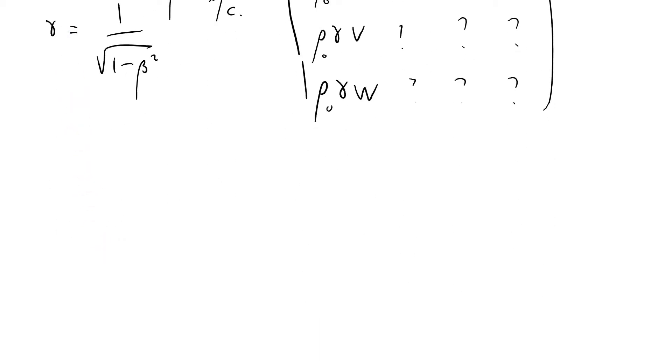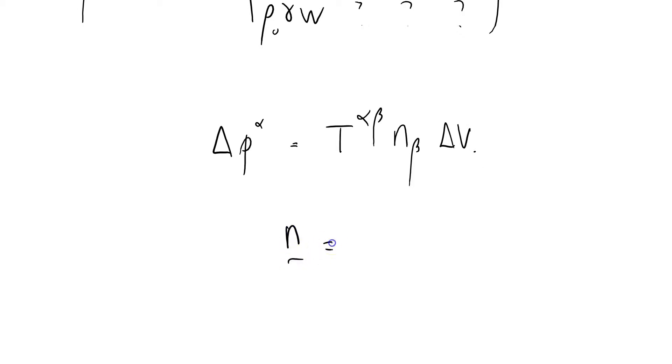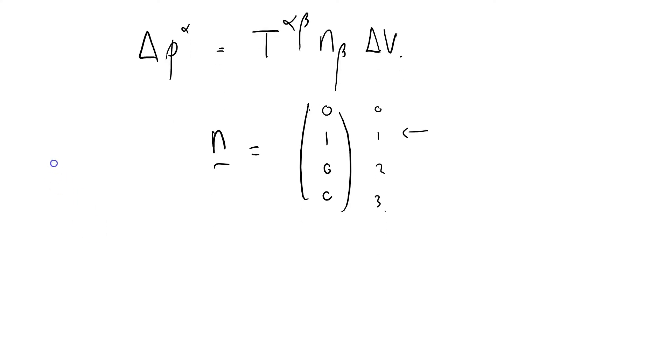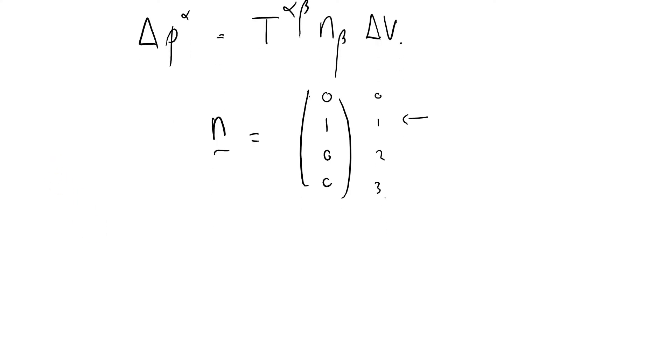So let me write down that equation again. We've got delta p alpha equals t alpha beta, which is of course what we're trying to find, n beta times delta v. But now I'm going to consider my vector. Last time we had that, but now I'm going to consider that: 0, 1, 2, 3 components. I've just got an x position there.